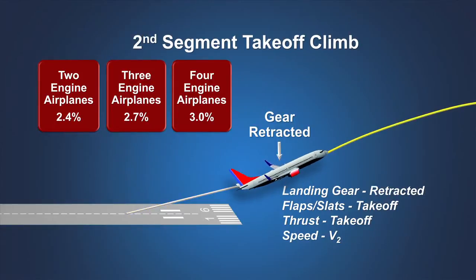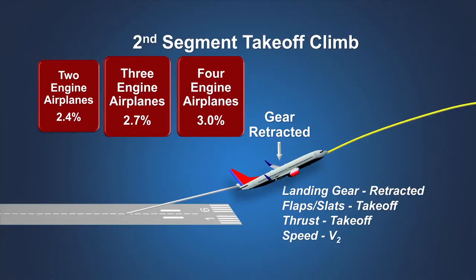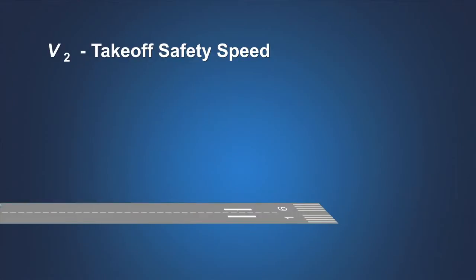The second segment begins once the landing gear is fully retracted. The airplane must once again demonstrate a minimum climb gradient in still air with one engine inoperative. For a turbine-powered airplane with two engines, that minimum climb gradient is 2.4%, which is determined at the point where the landing gear is fully retracted. Additional climb performance is required for airplanes with more than two engines. The first and second segment climb is based on flying V2 speed.